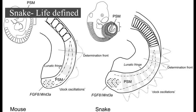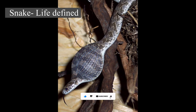Snake life defined. Snakes are elongated, limbless, carnivorous reptiles of the suborder Serpentes. Like all other squamates, snakes are ectothermic, amniote vertebrates covered in overlapping scales.